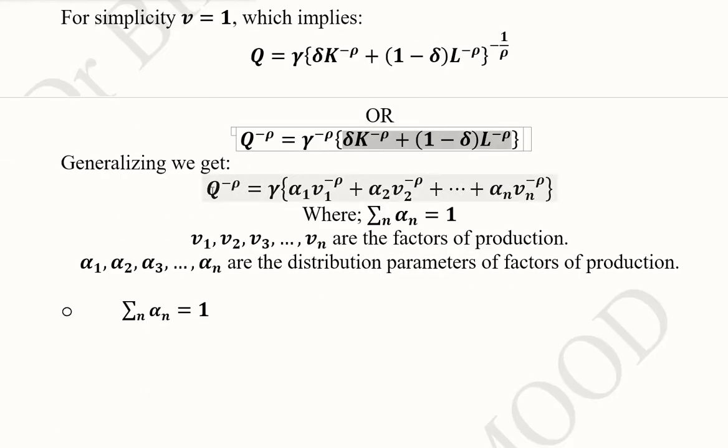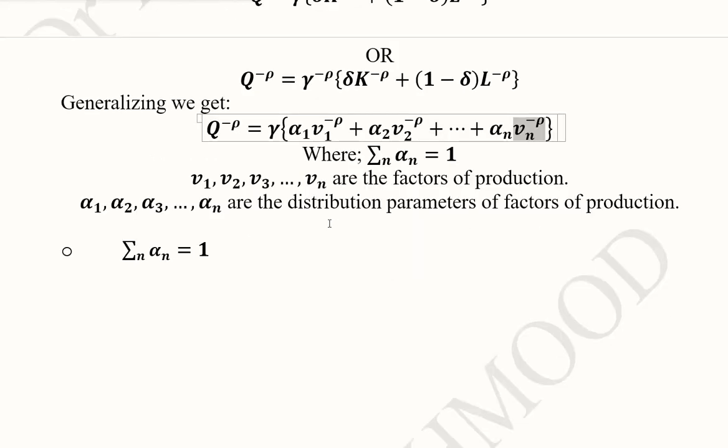We can generalize this form. We use a number of factors of production ranging from v₁ to vₙ. The function is extendable to any number of factors—for example, capital, labor, energy, and material.